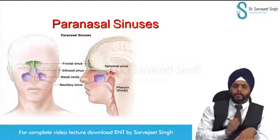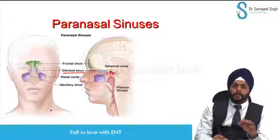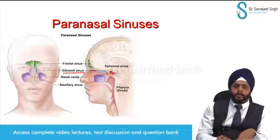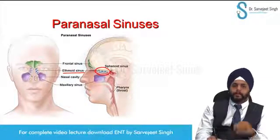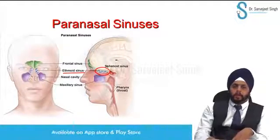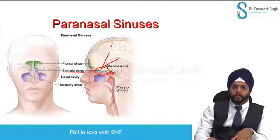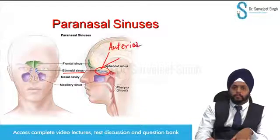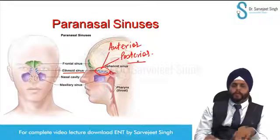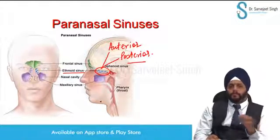After maxillary sinus comes the ethmoid sinus. The ethmoid sinus is a group of small tiny cells, and we divide them into two separate groups: anterior ethmoids and posterior ethmoids.